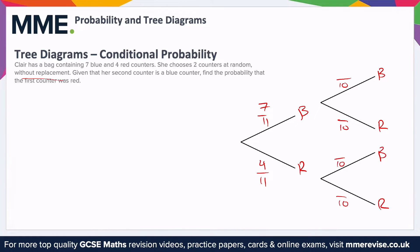If you draw a blue first, so there's seven originally, there'll be six blue afterwards. So this one's six out of 10. If you draw a blue first, then of course the red number hasn't changed, so it's still four red.